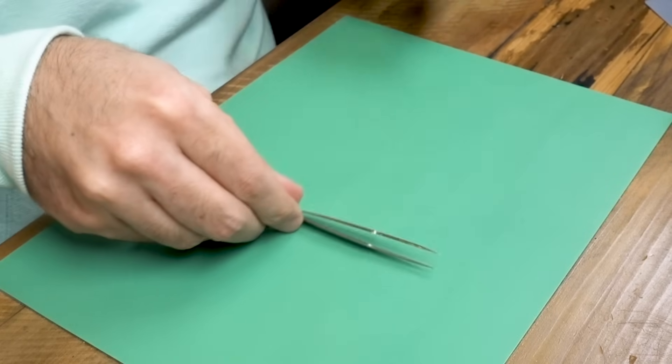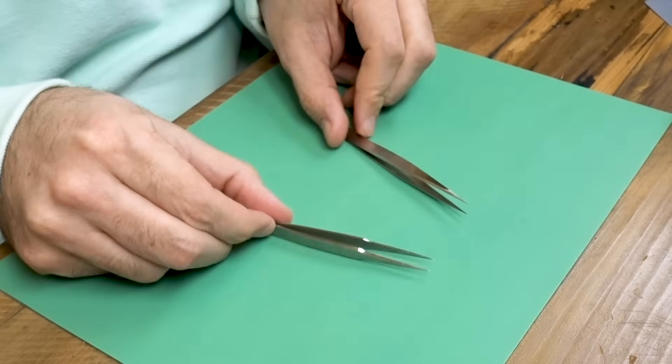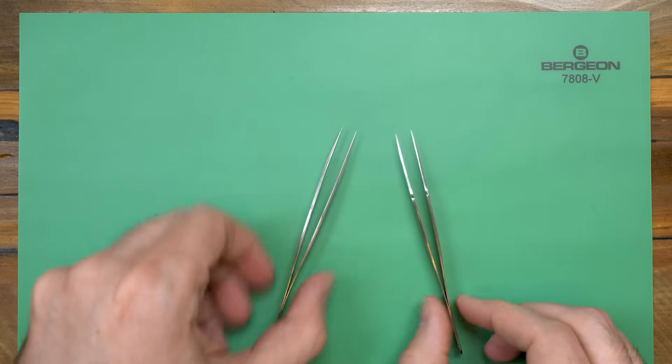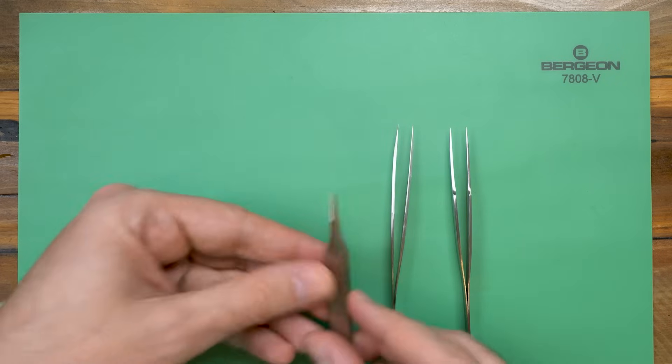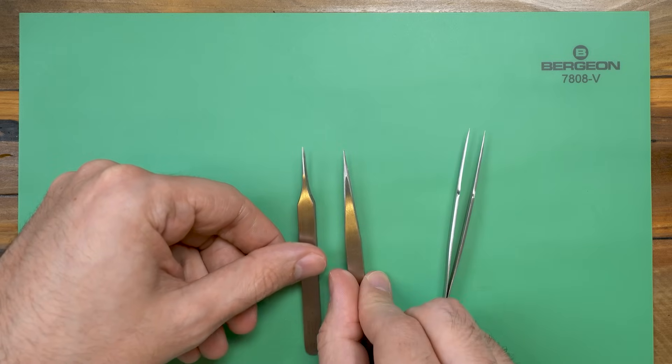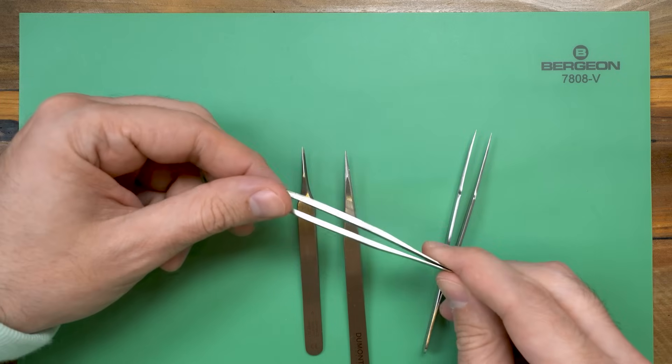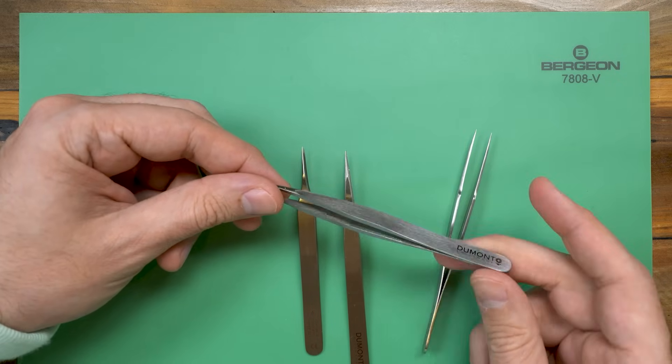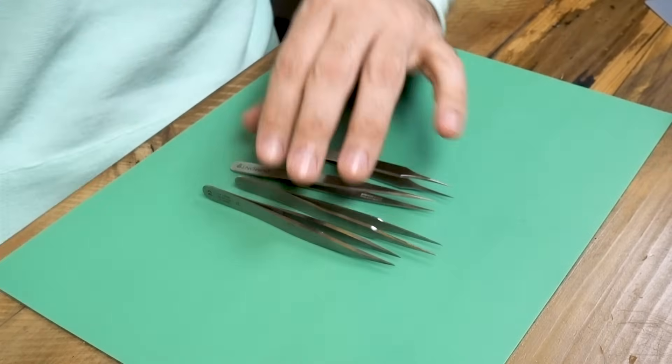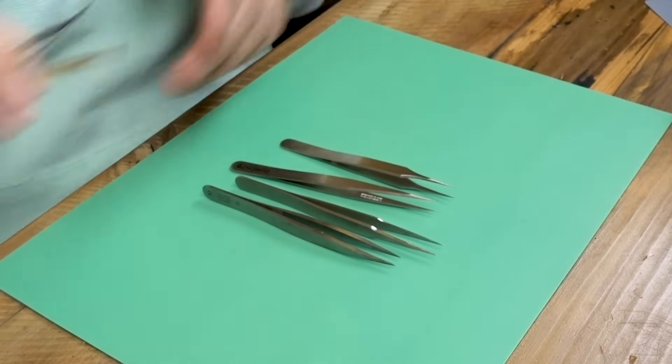For tweezers, you'll need one pair to start with. I recommend a number two or number three as they are good for all-purpose use. The higher the number, the finer the points on the tweezers, and they go down to double zero, which are quite beefy. Most tweezers that you'll find are stainless steel, but of course there are also dozens of specialist tweezers that you can explore further down the line.